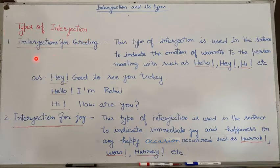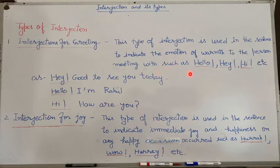Number 1: Interjection for greeting. This type of interjection is used in the sentence to indicate the emotion of greeting the person meeting with, such as Hello, Hey, Hi, etc. For example: Hey, good to see you today. Hello, I am Rahul. Hi, how are you?